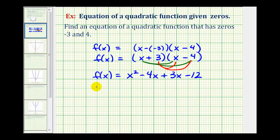Go ahead and combine our like terms here. So we have f(x) equals x squared. Negative 4x plus 3x is negative x. So we'll have minus x minus 12.